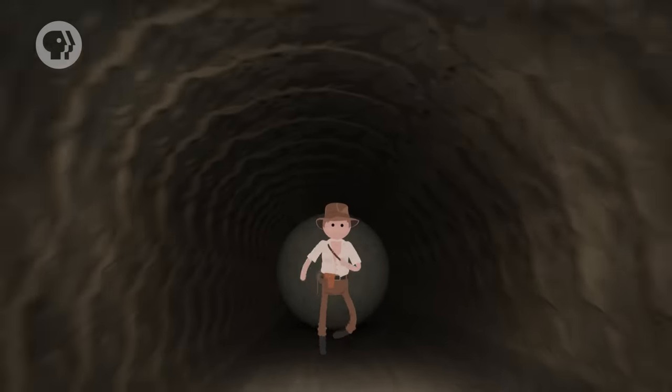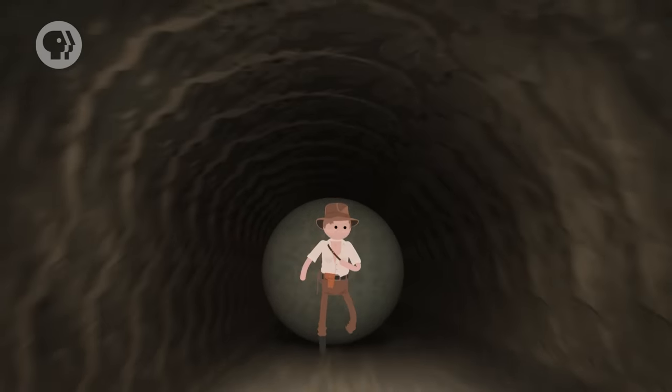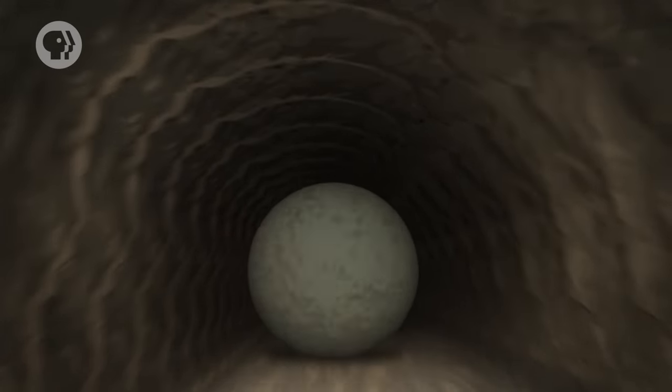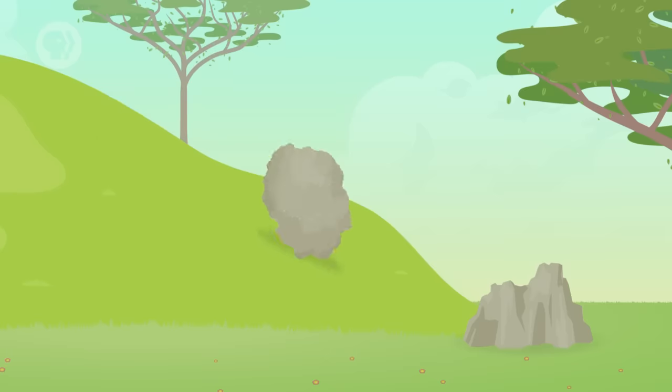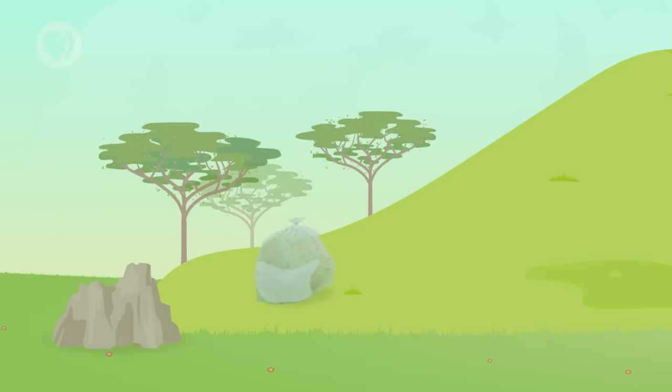But the boulder chasing Indiana Jones had a lot of mass and therefore lots of momentum. So it would have been much harder to stop. And momentum is one factor that affects collisions between objects. After all, if a huge boulder crashes into another huge boulder, that's going to be a very different sort of crash than if a bag of leaves crashes into a boulder.